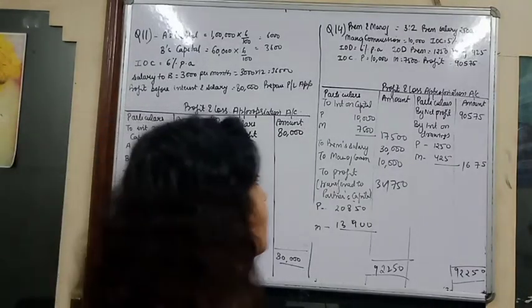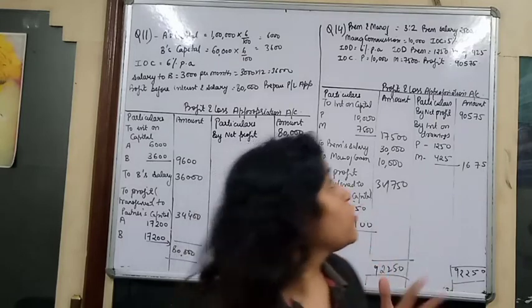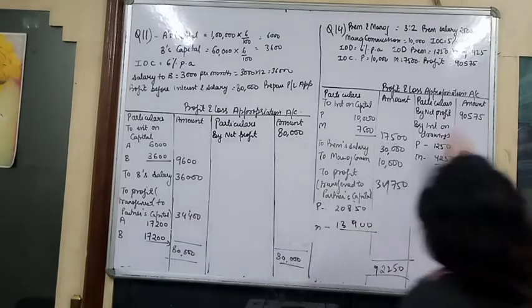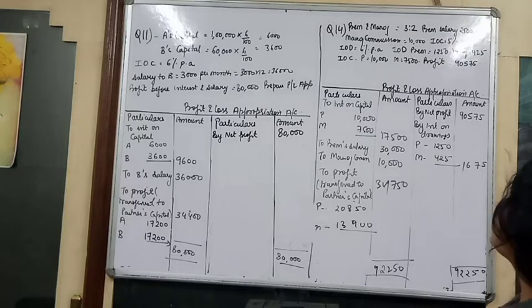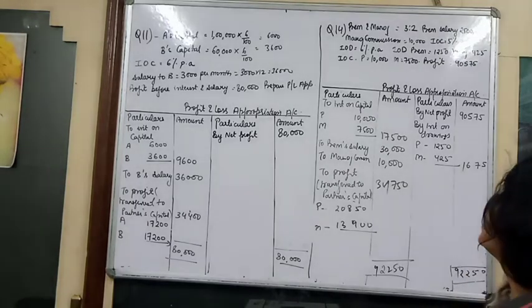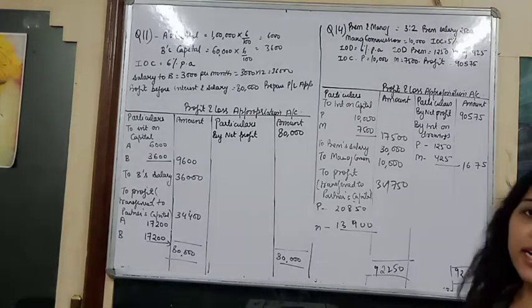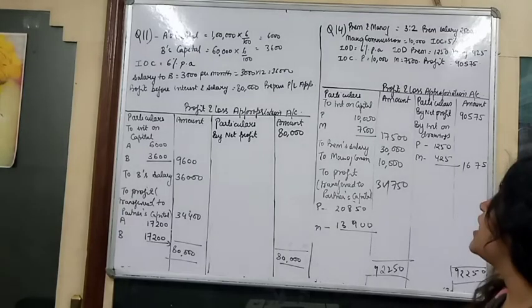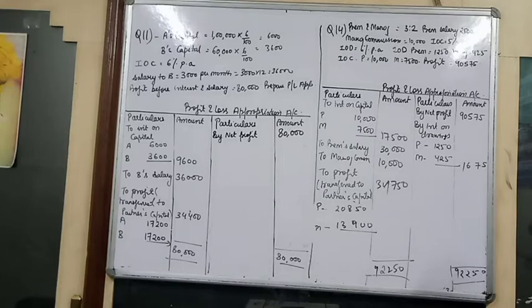Okay, so next question is question number 14. Preem and Manoj are partners. Ratio is 3 to 2. Preem's salary is 2,500 per month. Manoj's commission is 10,000. Interest on capital 5% per annum. Interest on drawing 6% per annum. Interest on drawing for Preem is given as 150, Manoj 425. Similarly, interest on capital is given - Preem 10,000, Manoj 7,500. Profit given is 90,575.